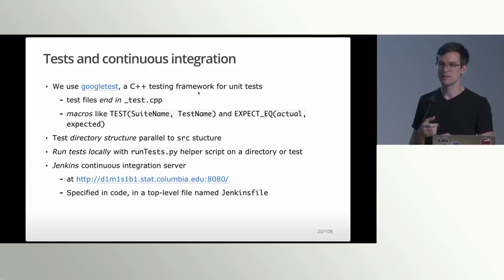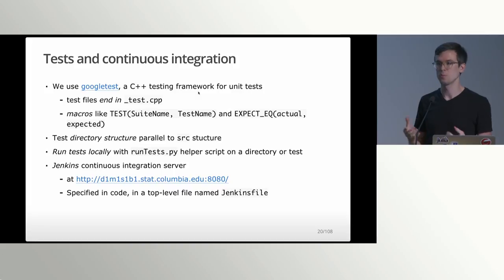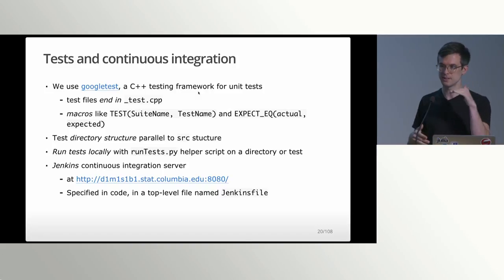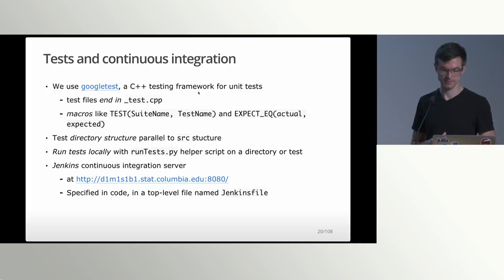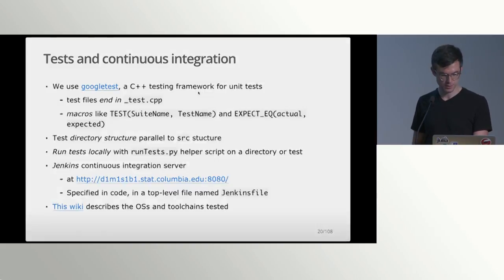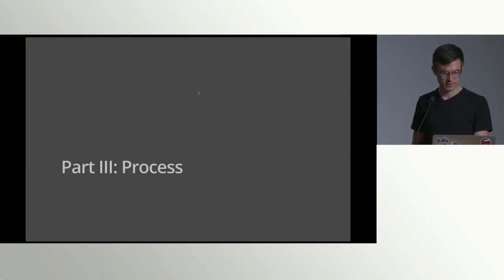The nice thing about Jenkins is that the code that actually runs the tests lives in the repo as well, in the Jenkinsfile at the top level. So if you're ever wondering how a test failed on Linux unit with MPI, you can go look in this file and it'll tell you exactly the steps that are run. There's one of these files per repo. We test a certain amount of OSes and toolchains that are in this wiki.